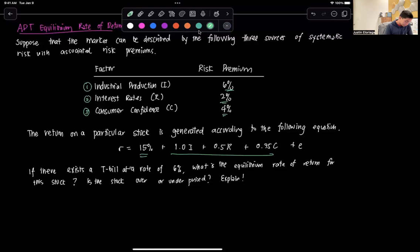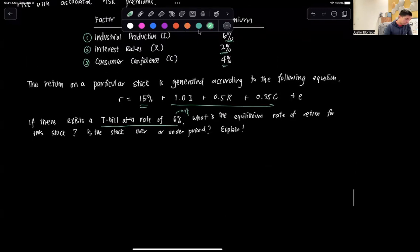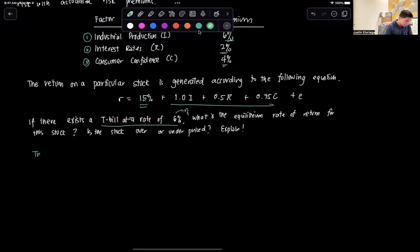We are asked to find the equilibrium rate of return for the stock under the case that there exists a T-bill at a rate of six percent. So this is the risk free rate in essence. This is pretty straightforward.